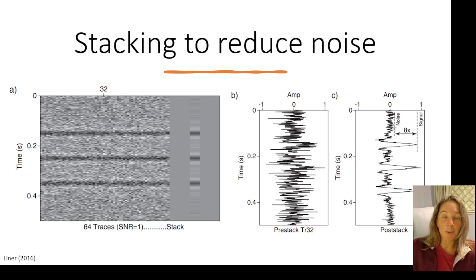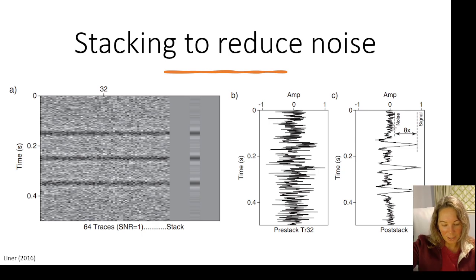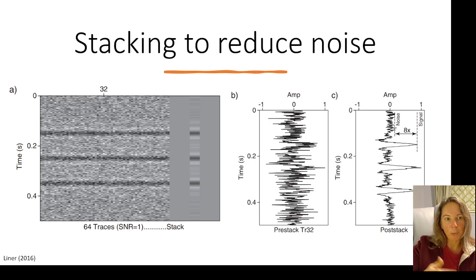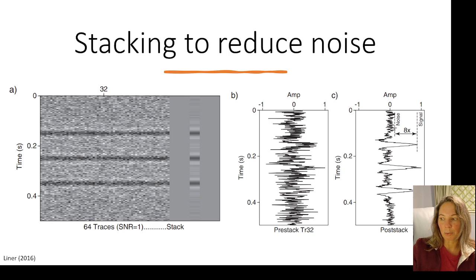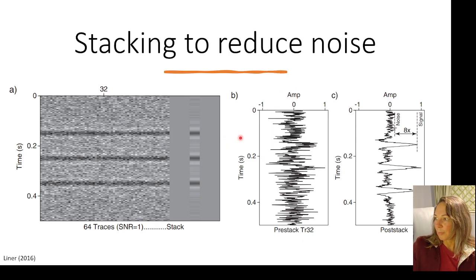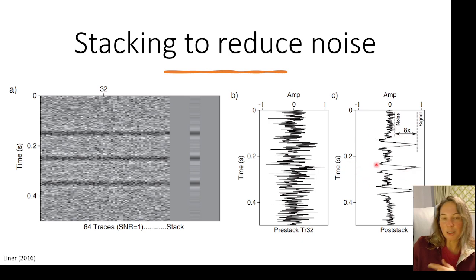One of the most common ways we try to remove noise is through stacking. What stacking does is take multiple traces that contain roughly the same signal — for the same 1D line into the earth — and sums them together. The idea is that coherent patterns, like reflections at the reflection points, will sum together, whereas the noise will cancel itself out. You can see here in this picture that we've got 64 traces on the left-hand side. If we look at just one of them, it looks very noisy. But if we sum together all 64, we get a nice clean signal like the post-stack one on the right-hand side of the slide.